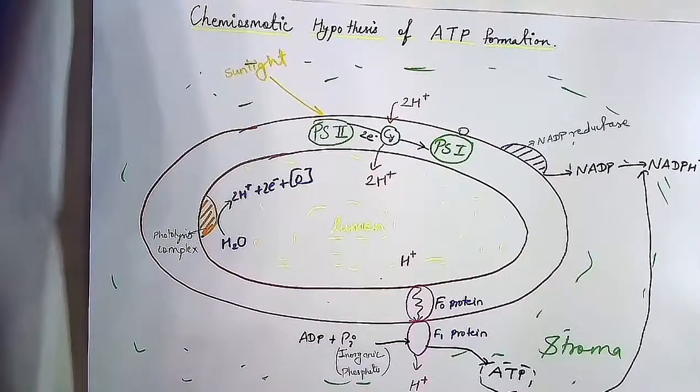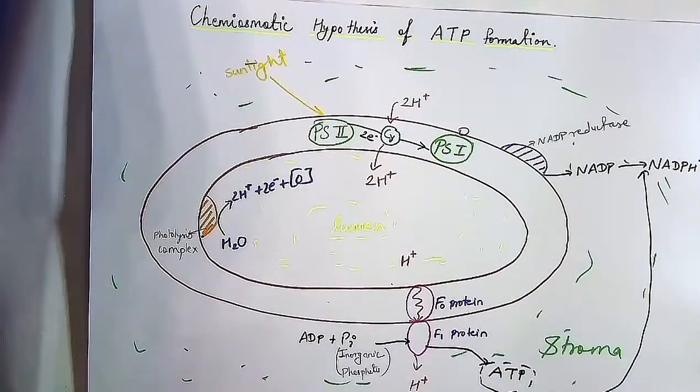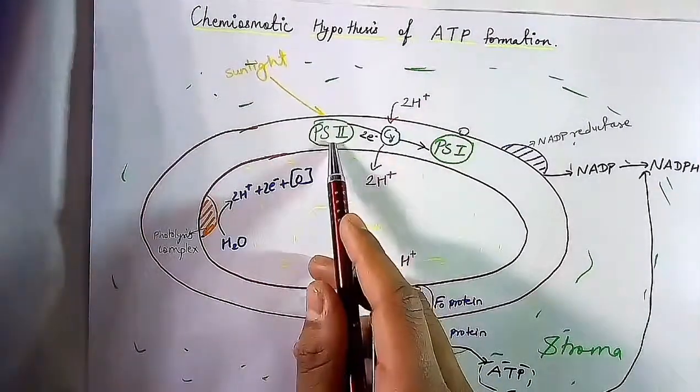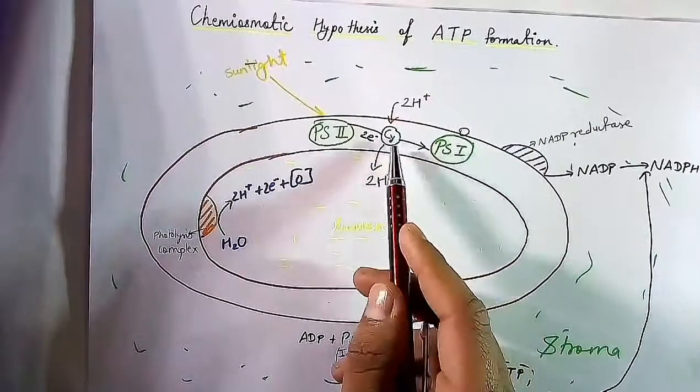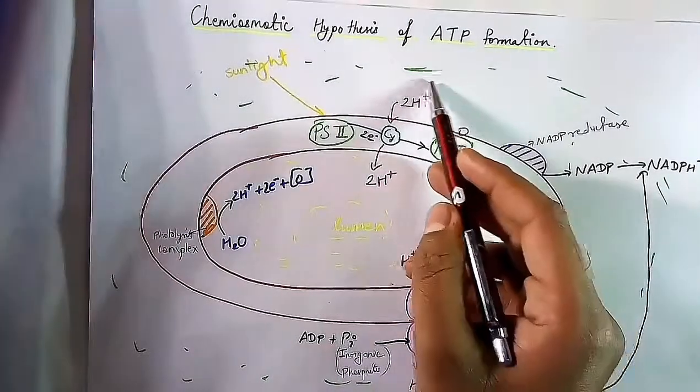When sunlight falls on photosystems, electrons get excited and during this process electrons are transported from PS2 to PS1 through cytochrome complex. During this process energy is released and that energy is utilized to pump protons from stroma to the lumen.